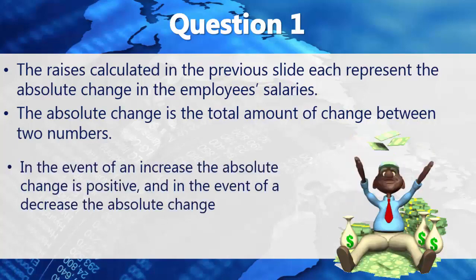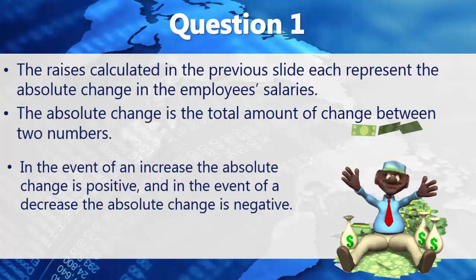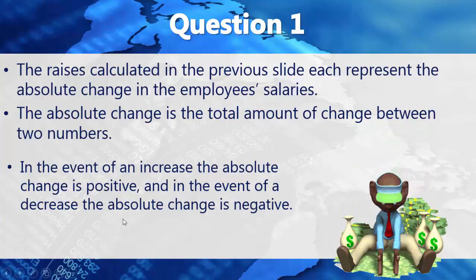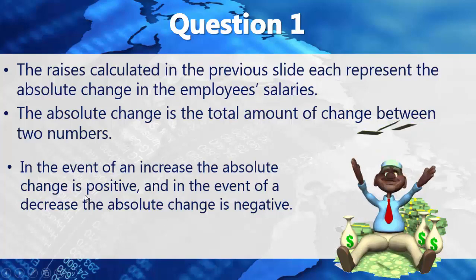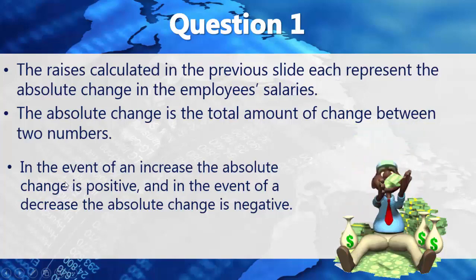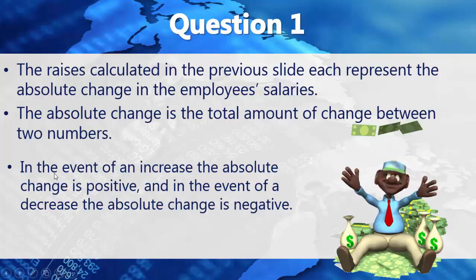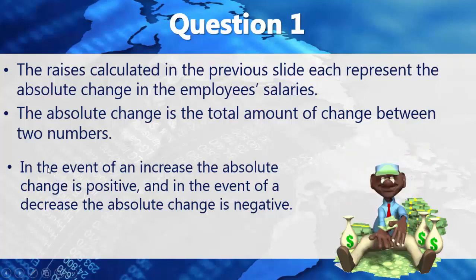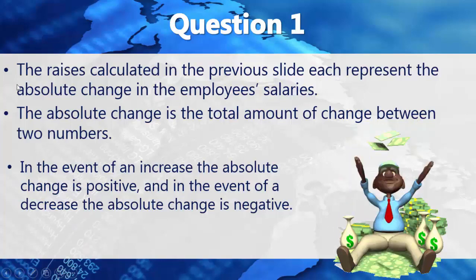In the event of an increase, the absolute change is positive, and in the event of a decrease, the absolute change is negative. Since all of these employees had a positive absolute change, all of their salaries actually went up between 2018 and 2019.